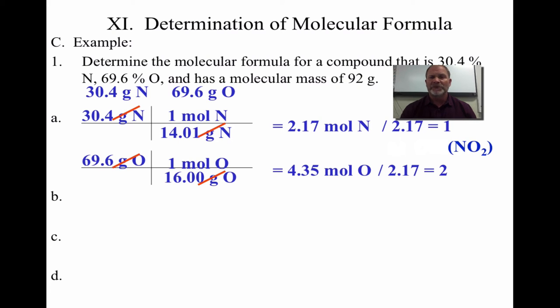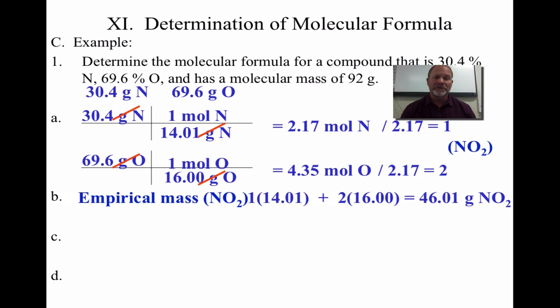Well, now I have to figure out the multiple. So I have my molecular mass, my 92, I'm going to divide it by my empirical mass. To get that, I just go to my empirical formula, NO2, and I'm going to add up one nitrogen and two oxygens, and it weighs in at 46.02.